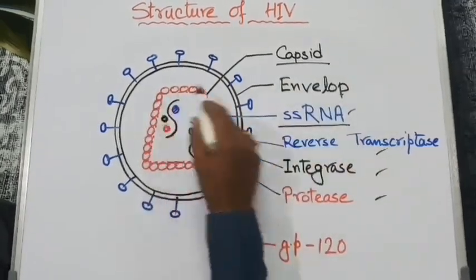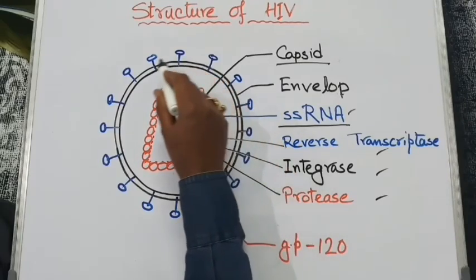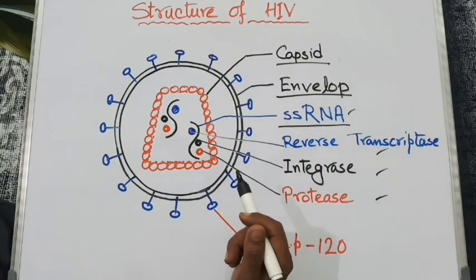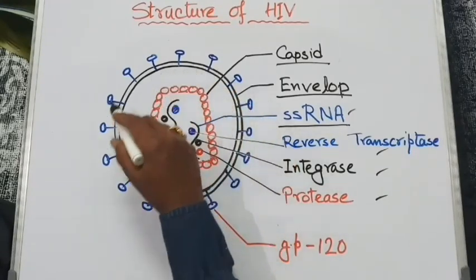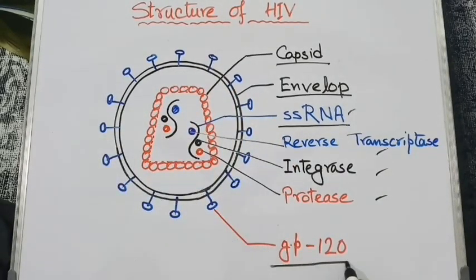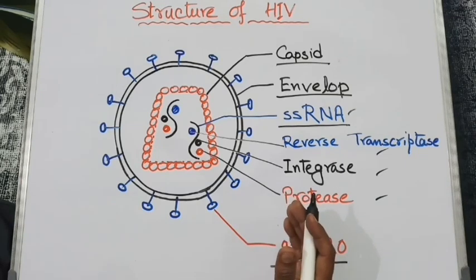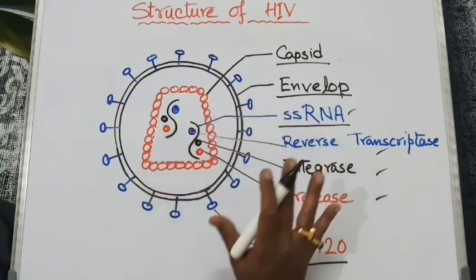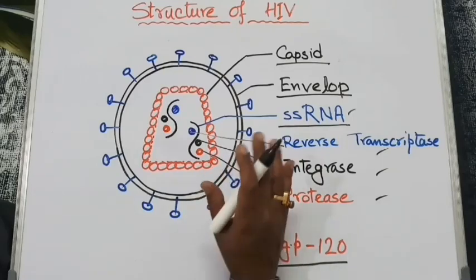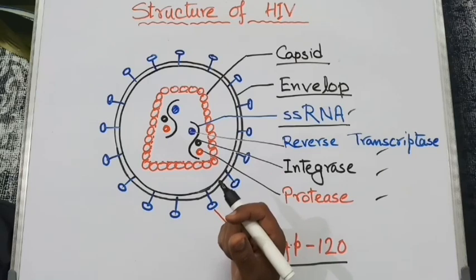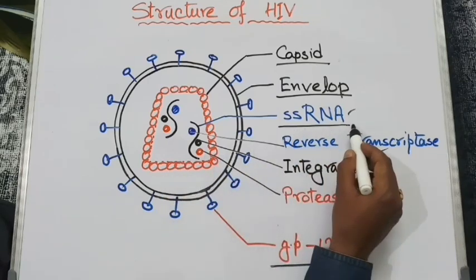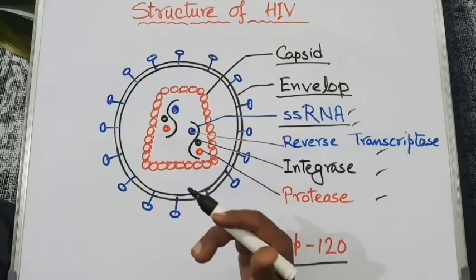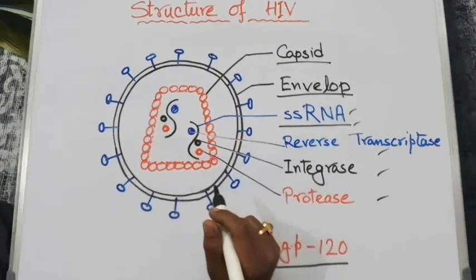The RNA and three different enzymes are packed inside the capsid. The outermost region is covered by a lipid envelope which provides protection. On this lipid envelope, we find several glycoprotein receptors known as GP120 — GP stands for glycoprotein. This receptor helps the virus bind with different immune cells in our body. Whenever these viruses infect a body cell, only the single-stranded RNA and three enzymes enter; the capsid, envelope, and GP120 remain outside the host cell.